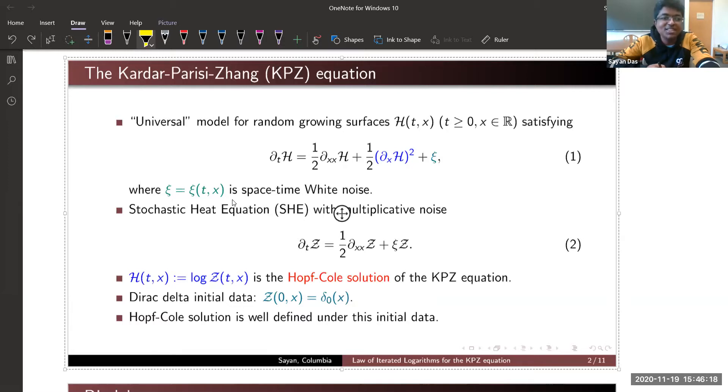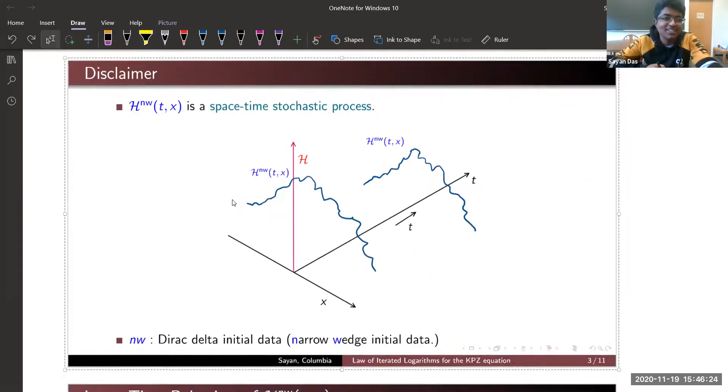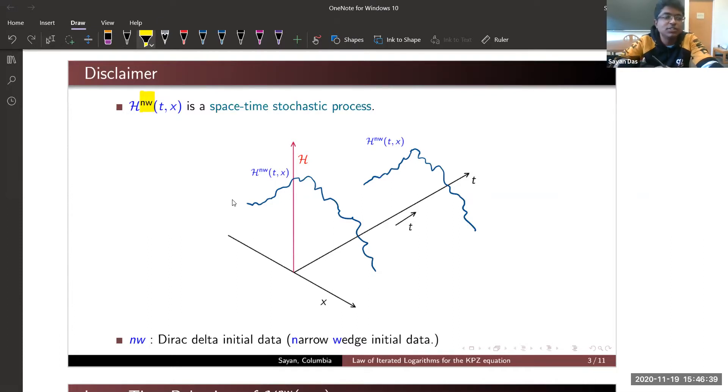If you are unfamiliar with KPZ equation, this slide is kind of hard to digest. Think of H(t,x) as just like a space-time stochastic process—fixing time t, you can think about it as a random function which is evolving in time. I have a w here to denote the fact that I am considering Dirac delta initial data, also known as narrow wedge initial data. Whatever I have defined in the first slide ensures that this process is well-defined and has a unique law.